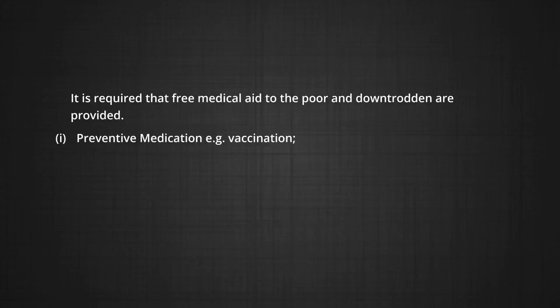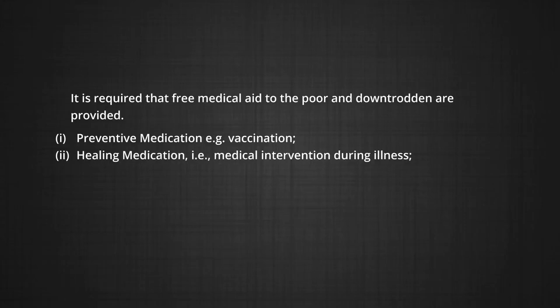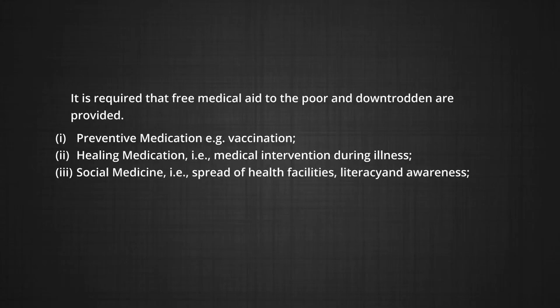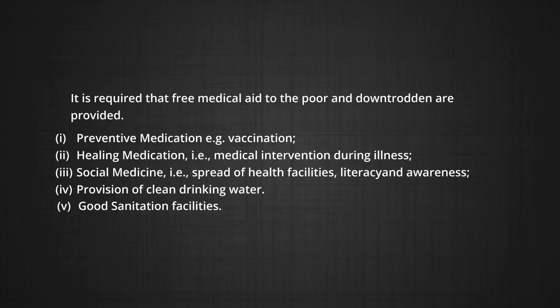Ways to improve health include: preventive medication such as vaccination; healing medication, that is medical intervention during illness; social medicine, meaning the spread of health facilities, literacy, and awareness; and provision of clean drinking water and good sanitation facilities. The general health standard in India is very low, reflected in the high incidence of morbidity. This is related to poverty, as many people do not get even a square meal a day.